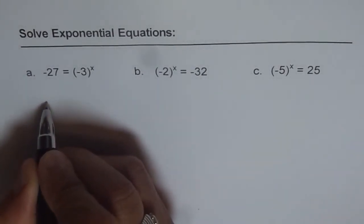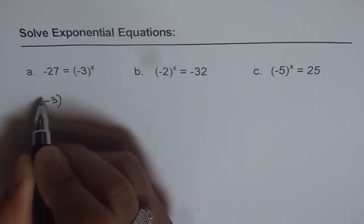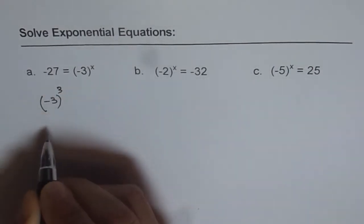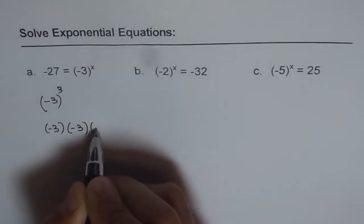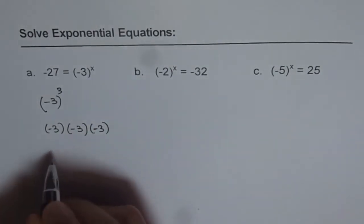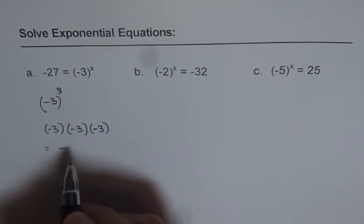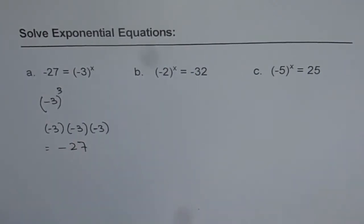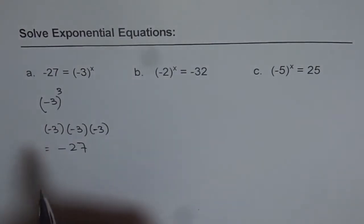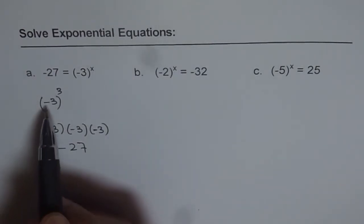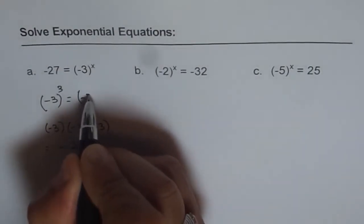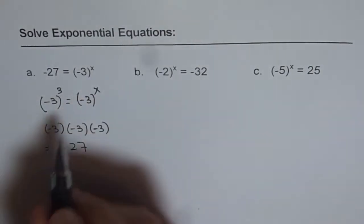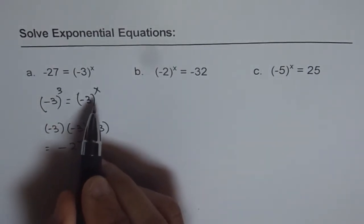Minus 27 can be written as minus 3 to the power of 3. If you multiply minus 3 three times, what do you get? Minus multiplied three times gives minus, and 3 times 3 is 9, and 9 times 3 is 27 — so you do get minus 27. Therefore, we can write minus 27 as minus 3 to the power of 3, giving us minus 3 to the power of 3 equals minus 3 to the power of x.